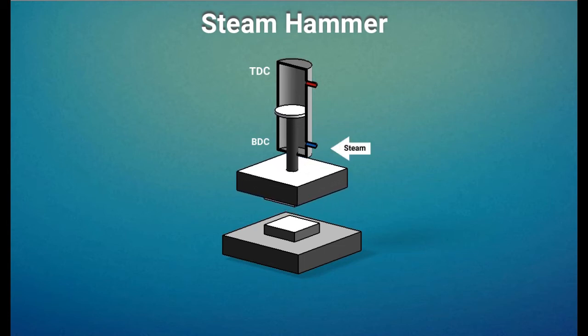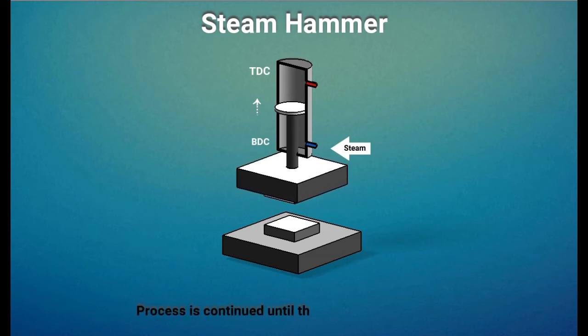Steam is then passed through the lower port making piston move upward. The process continues until the raw material is forged.